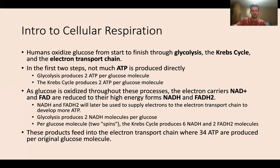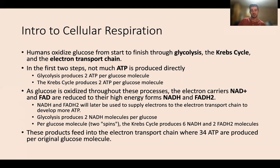As glucose is oxidized throughout these processes, the electron carriers NAD+ and FAD are reduced to their high-energy forms NADH and FADH2 — also referred to as their reduced forms — and their job is to carry energy throughout the different systems in the form of electrons. NADH and FADH2 will later supply electrons to the ETC to produce more ATP. Glycolysis produces two NADH per glucose, and the Krebs cycle produces six NADH and two FADH2 per glucose (two spins). These products feed into the electron transport chain where 34 ATP are produced per original glucose molecule.